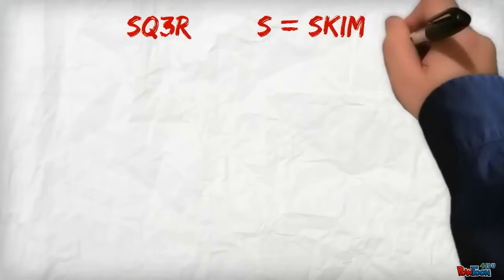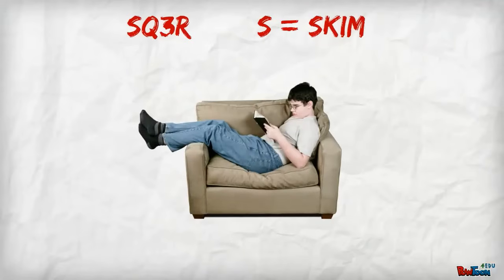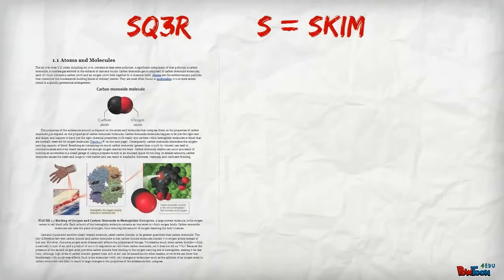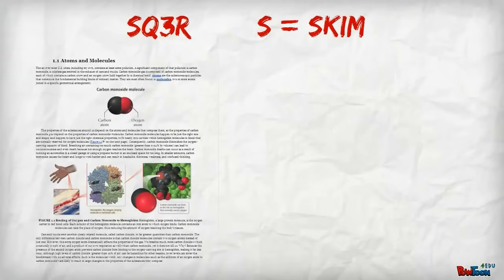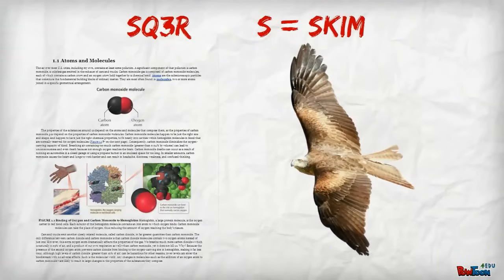The S is for skim. Before you curl up with a blankie and hot cocoa to read, take a moment to skim over the entire text. Skim means to look something over at a bird's eye view. Look at main headings, bolded words, and any pictures or diagrams.